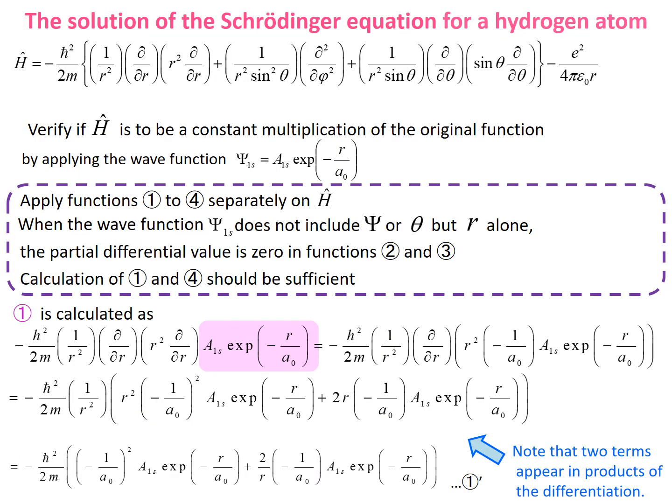As for the given problem here, we are going to apply this Hamiltonian to the most straightforward solution of the hydrogen atom, called the 1s orbital function, to confirm if its solution should be the eigenfunction and then obtain the energy eigenvalue. We have three terms in the kinetic energy operator and four terms in the potential energy operator.